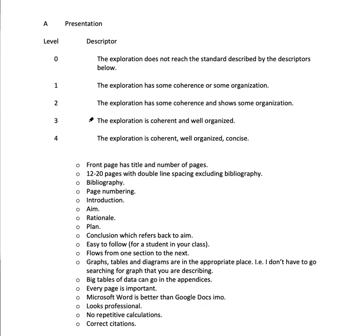I think at the very minimum you should be getting three out of four in this criterion. Two out of four means some coherence and some organization — that means it's not fully coherent and not well organized, which is just not a good IA. Three is good and four is what we're aiming for. The hard one to get is concise — every page is important. It's 12 to 20 pages, but you can have a 20-page concise IA or 12 pages of waffle that's not concise at all, or just full of tables of data.